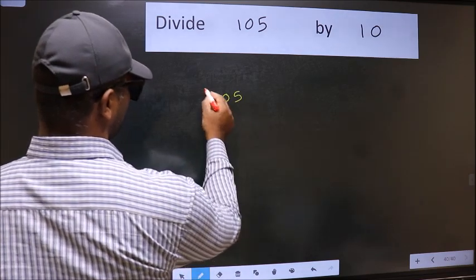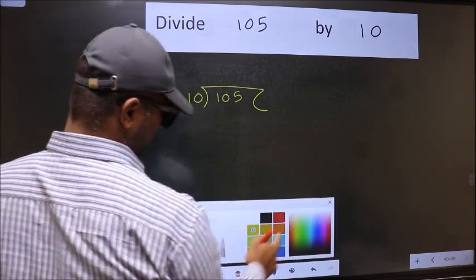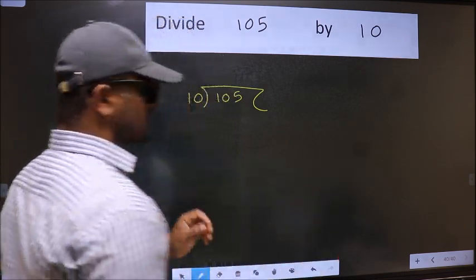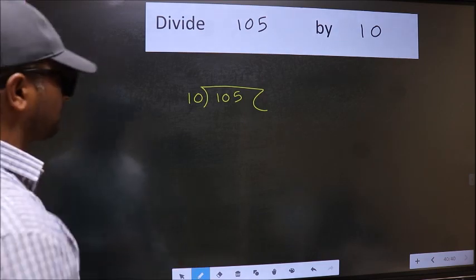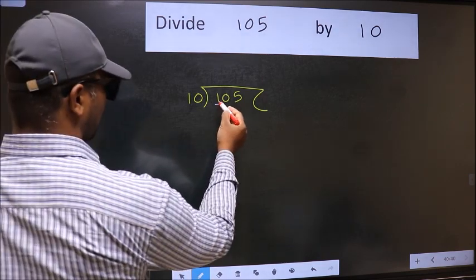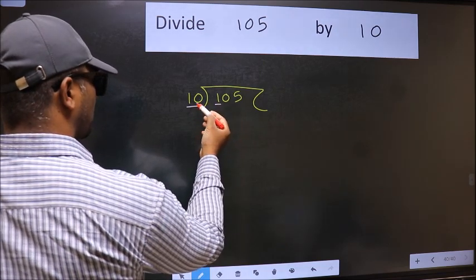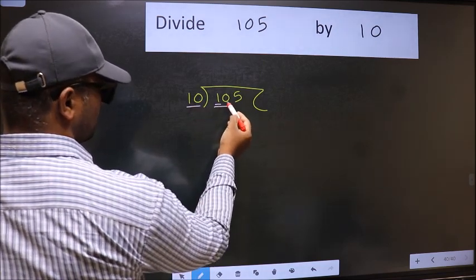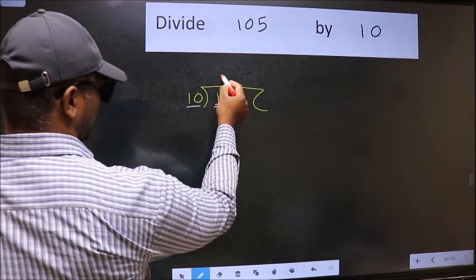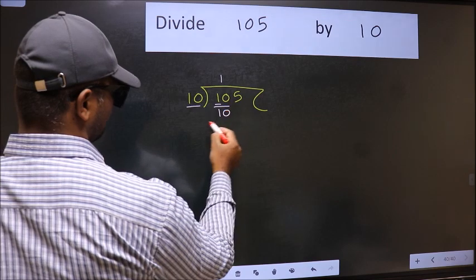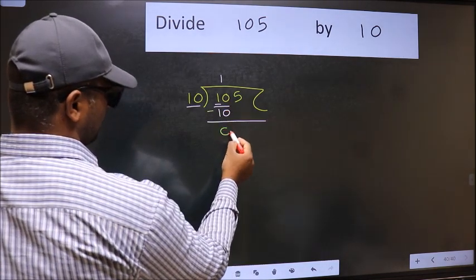105 and 10 here. This is your step 1. Next, here we have 1 and here 10. 1 is smaller than 10, so we should take two numbers: 10. When do we get 10 in 10 table? 10 ones is 10. Now we should subtract. We get 0.